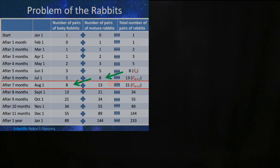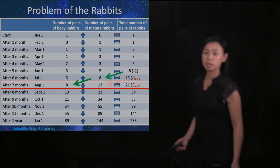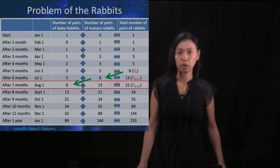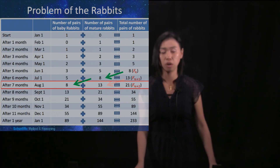In the rightmost column, there are numbers 1, 1, 2, 3, 5, 8, 13, 21, and so on.